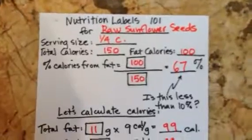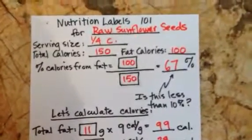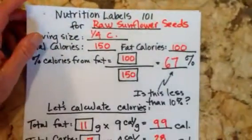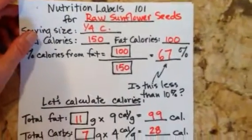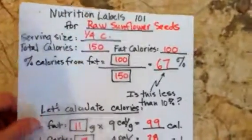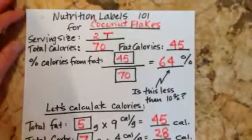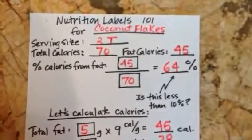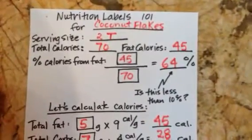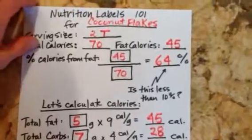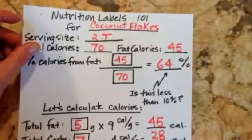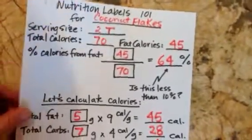Sunflower seeds — again, all your nuts and seeds are going to be high in fat, so use them as condiments. We put sunflower seeds in our Asian cabbage salad, but in a salad that serves six or eight, throwing a handful in is nothing at all. Coconut is another high-fat food. These coconut flakes — just two tablespoons — are 64% fat. So use coconut flakes in your oatmeal or in your baking, but minimize the amounts you use.